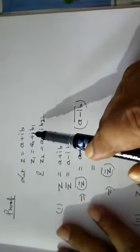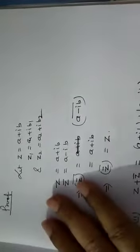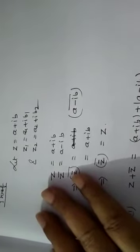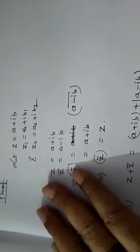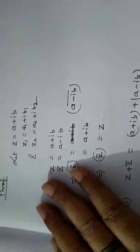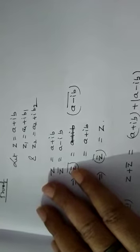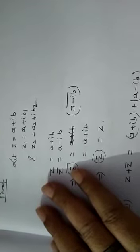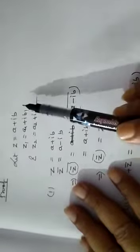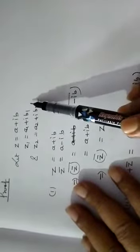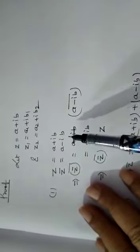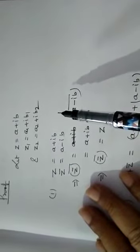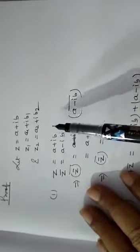Now I want to discuss the proof of these properties. You must solve the problems, because by solving them you will learn a lot. Let z equal to a plus ib, z1 equal to a1 plus ib1, and z2 equal to a2 plus ib2. We will use this notation throughout all the problems.